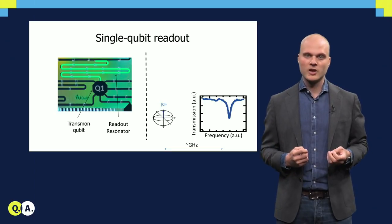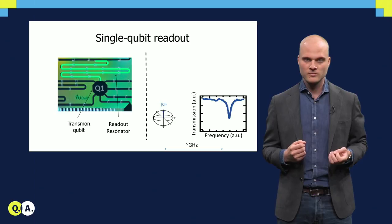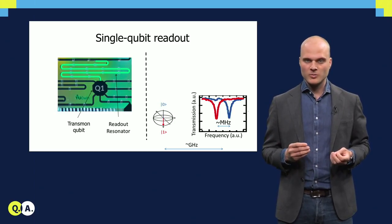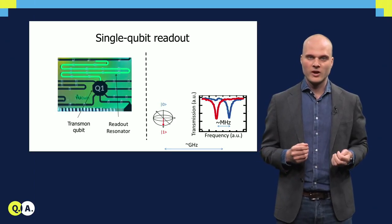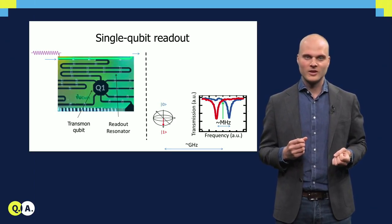This shift is evidenced by the measured resonator transmission dips of the qubit in the ground state and the excited state. This shift is typically on the order of a few megahertz, three orders of magnitude smaller than the detuning.